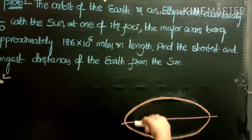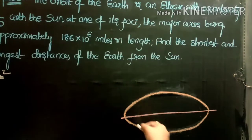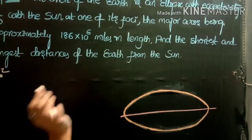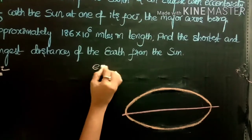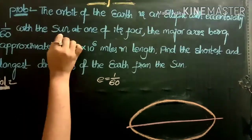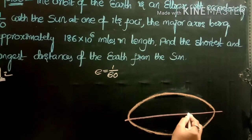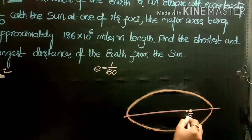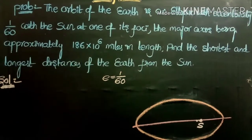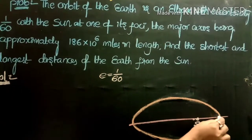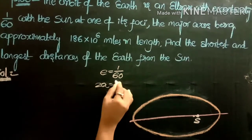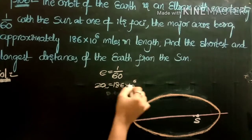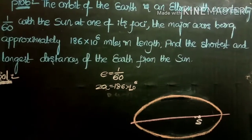The earth rotates around the sun in this elliptical orbit. Given that eccentricity e = 1/60, and the sun is at one of the foci. The major axis length 2a = 186×10⁶ miles is given.